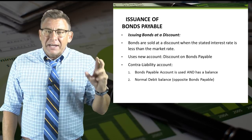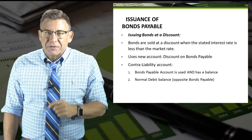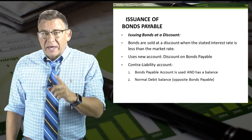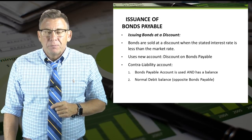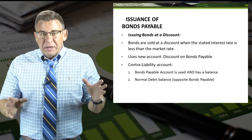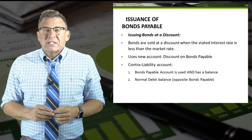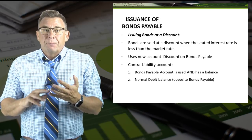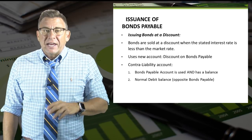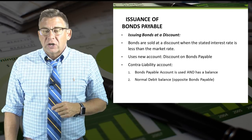When a bond's stated interest rate is less than the market, the bond will be sold for less than face value. We call this a discount, and we use a new account — Discount on Bonds Payable — which is a contra liability account. This means in order to use the account Discount on Bonds Payable, we must also be using the Bonds Payable account. Also, Discount on Bonds Payable has a normal debit balance, which is different than regular liability accounts.